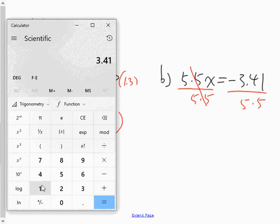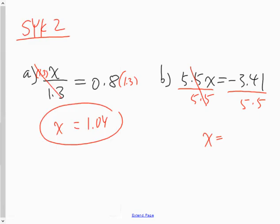Negative 3.41. I'm not going to put positive and negative because I know my answer is going to be negative because it's a negative divided by a positive. So I'm not going to worry too much about signs. Divided by 5.5 is equal to 0.62, so x equals negative 0.62.